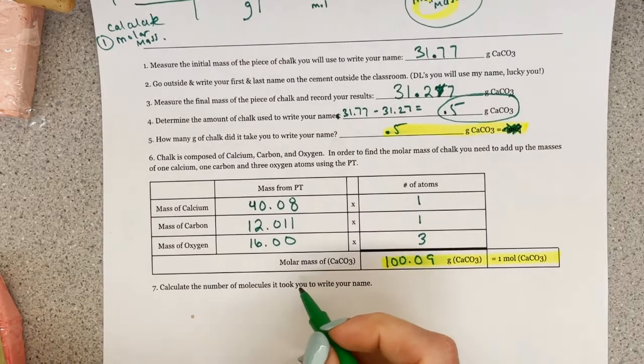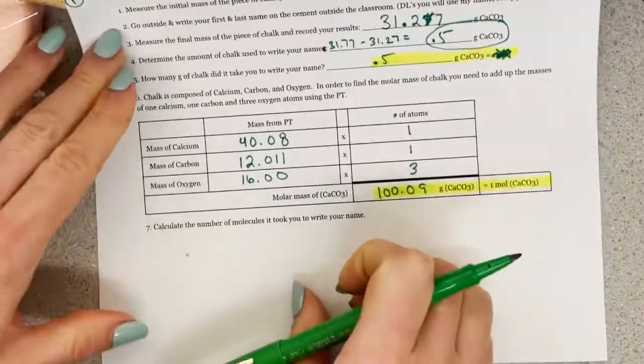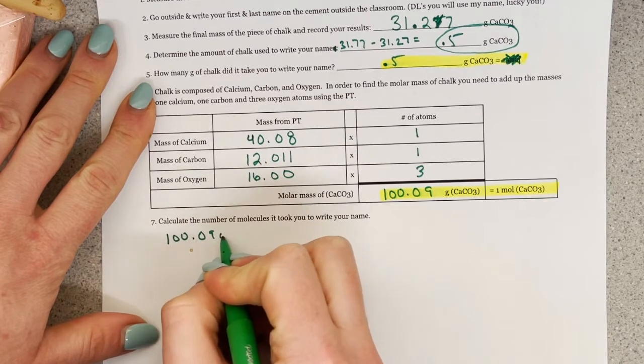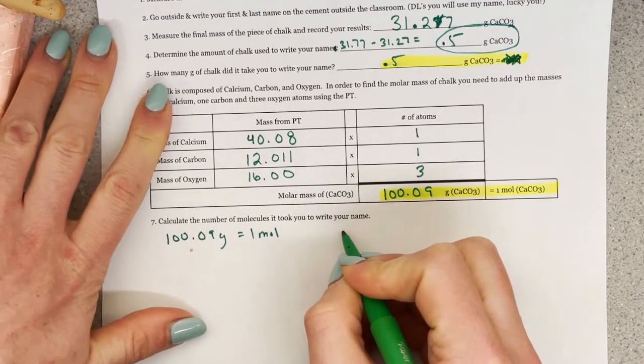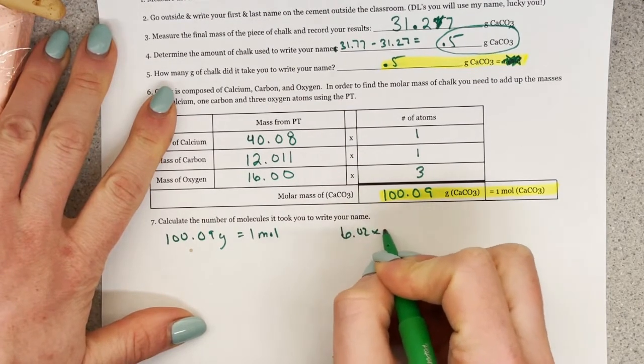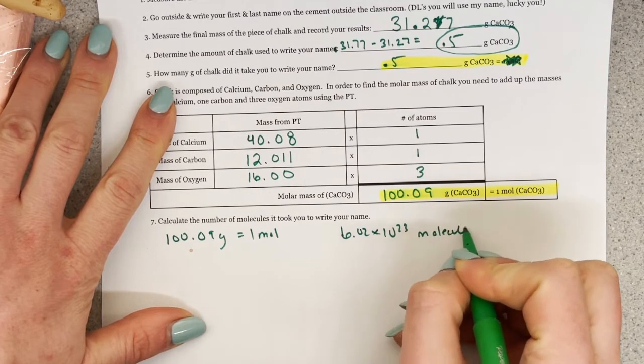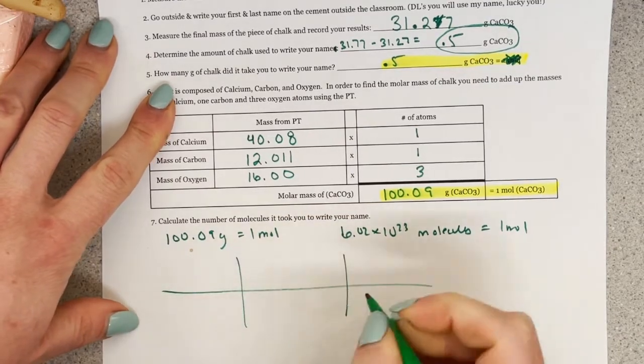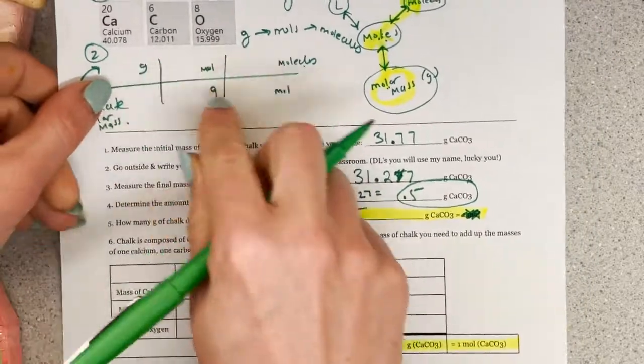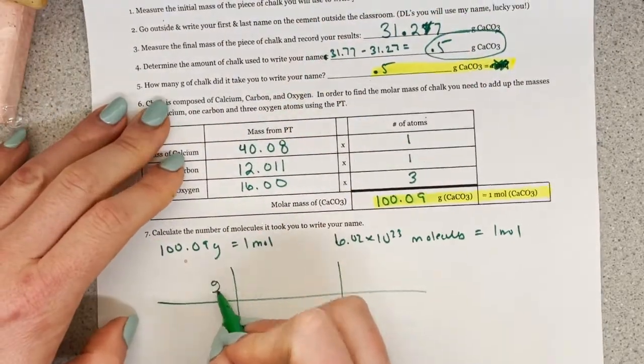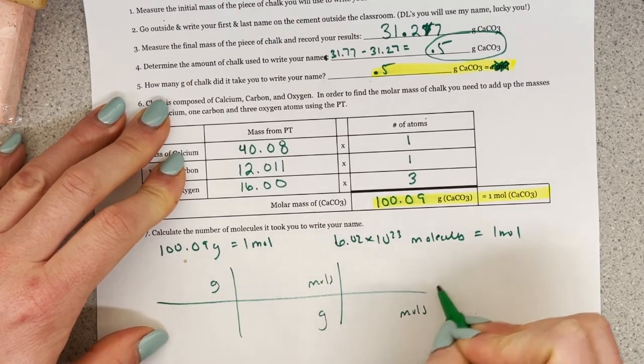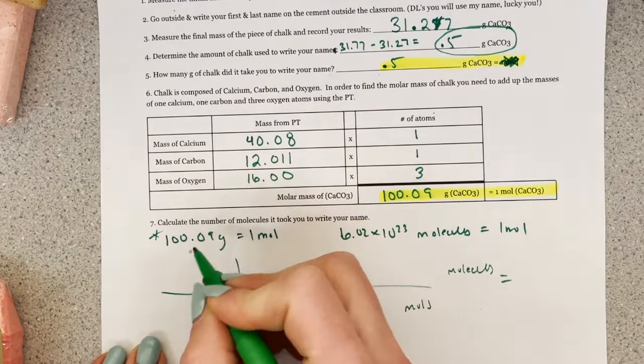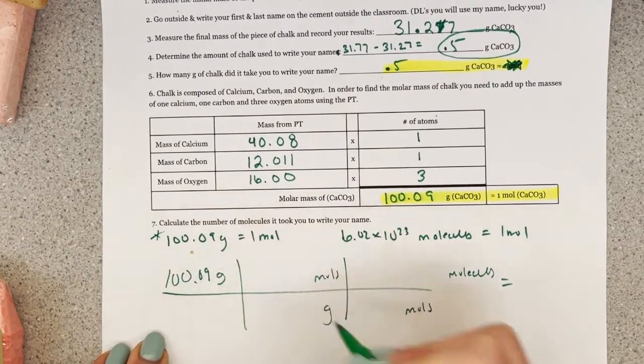Okay, so number 7 says, calculate the number of molecules it took you to write your name. So I'm going to go ahead and write down a few things that are important. The first is that I have 100.09 grams, which equals 1 mole. I also know that 6.02 times 10 to the 23rd molecules equals 1 mole. Okay, so I'm going to go ahead and set this up like this. And we said we're going to start with grams. Grams, grams, moles, moles, molecules. Okay, so grams, grams, moles, moles, molecules.